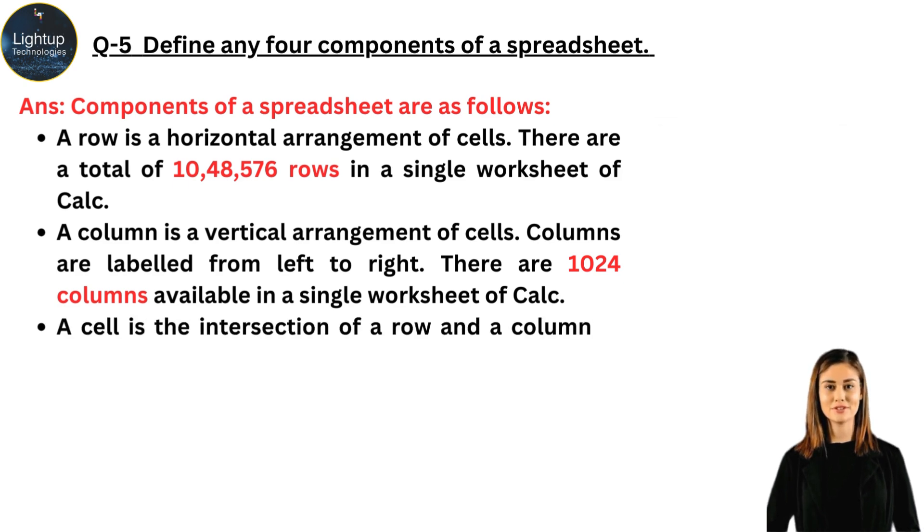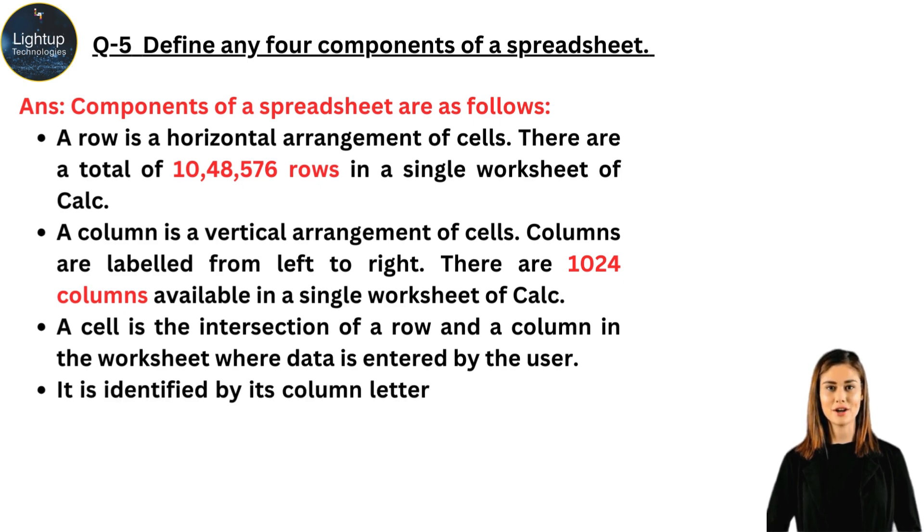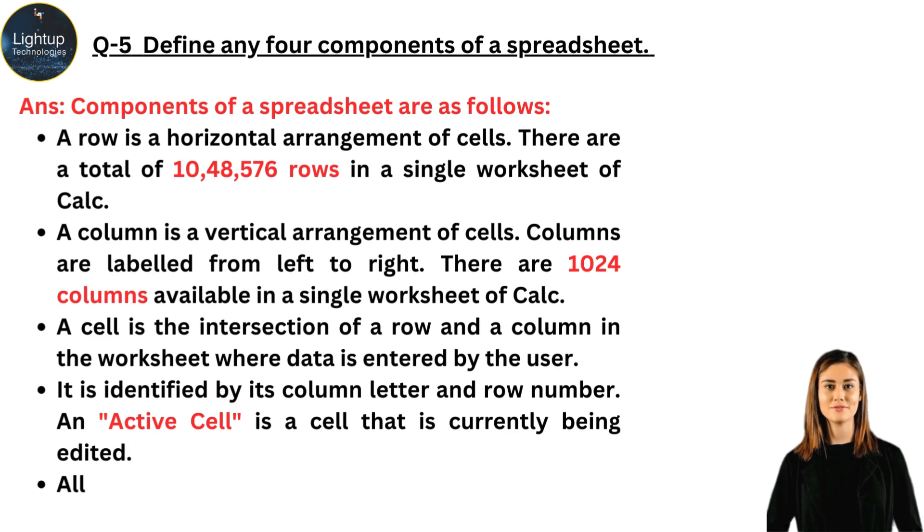A cell is the intersection of a row and a column in the worksheet where data is entered by the user. It is identified by its column letter and row number. An active cell is a cell that is currently being edited. All the data that is entered by the user appears in the formula bar.